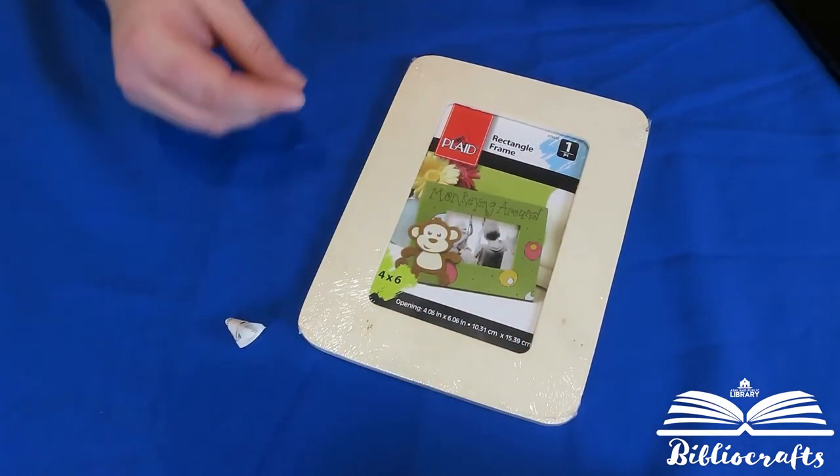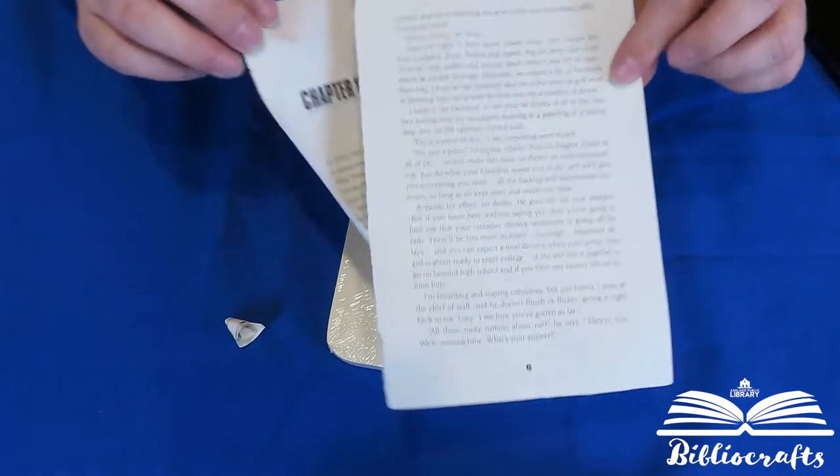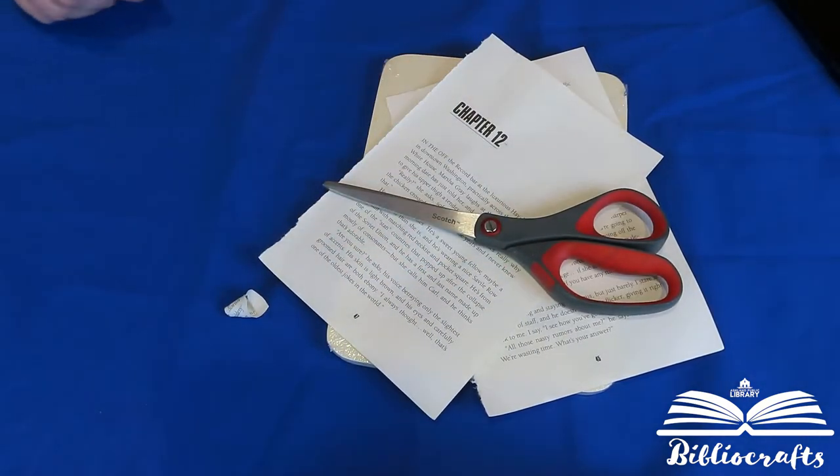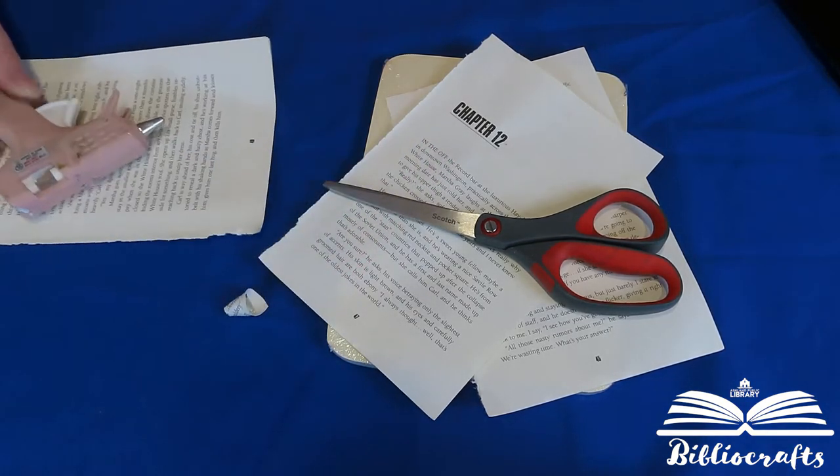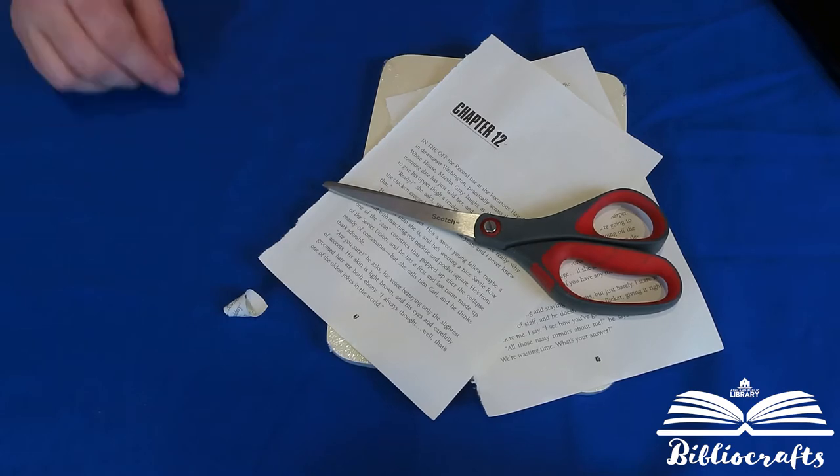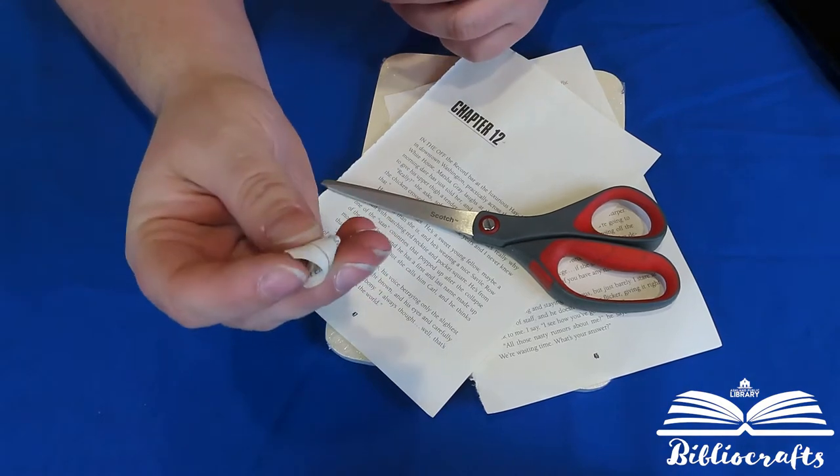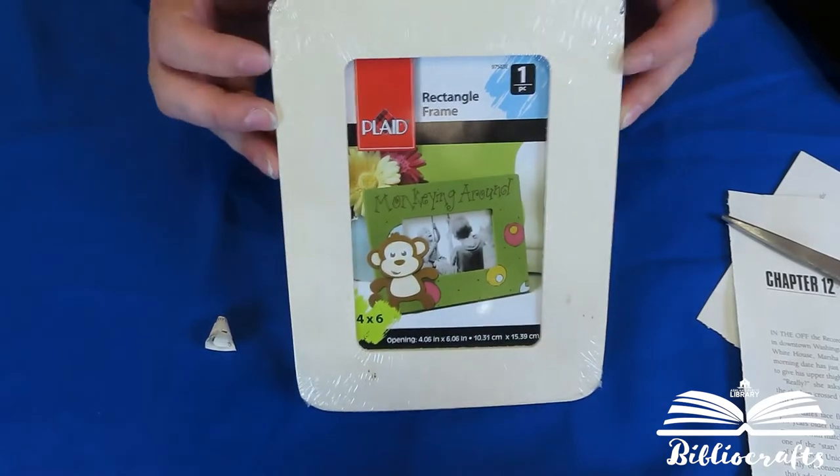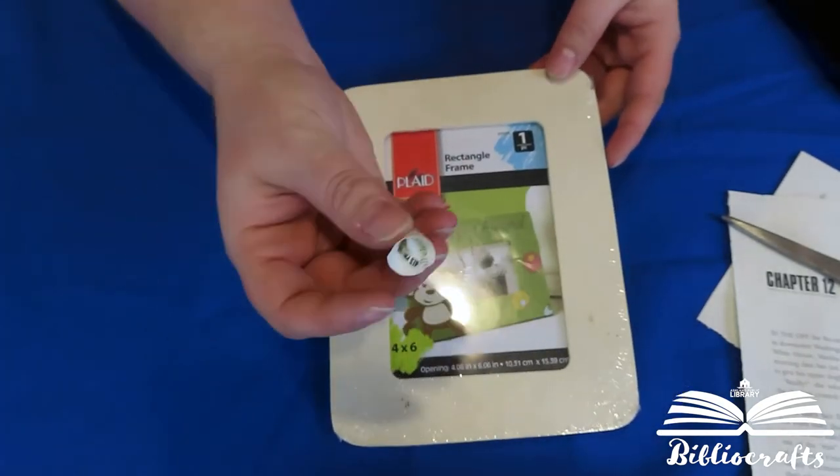So all you need is your pages from an old book, you'll need some scissors, and then you'll need glue. You can use a glue gun, you can also use school glue to glue these closed, and you can also use a glue stick on the flowers, but you are going to need either school glue or hot glue to attach to your picture frame.